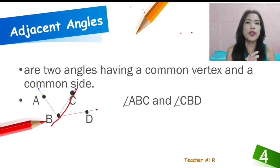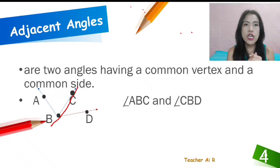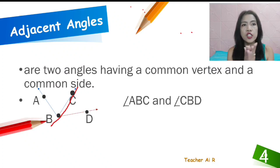Their vertex is B and their same side is BC. If you could see, the red line is their common side. So their common side is BC and their common vertex is B. Again, the adjacent angles are two angles having common vertex such as vertex B and the common side as BC.